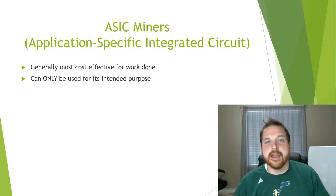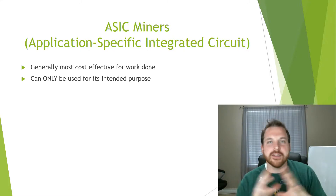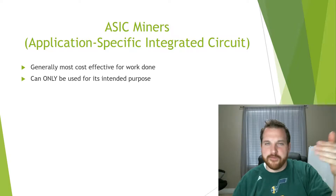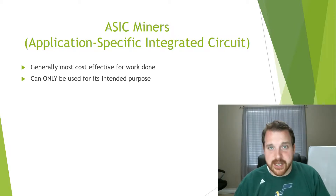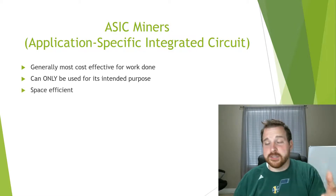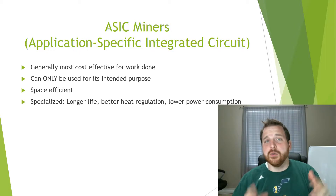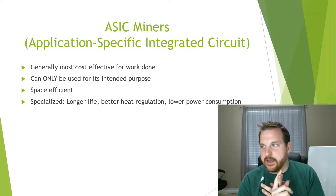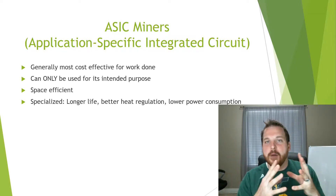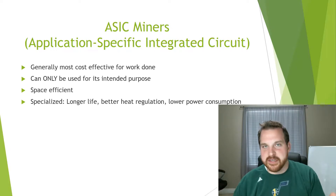There are ASIC miners for all different kinds of coins — Litecoin, Bitcoin, Dash, Dogecoin, and more. Bitmain is a big distributor of ASIC miners and they usually sell out quickly because they are the most efficient at the time they're released. They are space-efficient compared to GPU miners, and since they're made for one purpose they generally have a longer lifespan, better heat regulation, and lower power consumption — everything is optimized for what they're supposed to do.